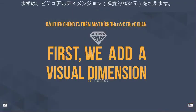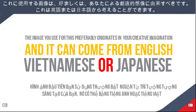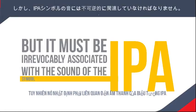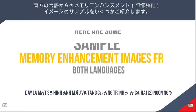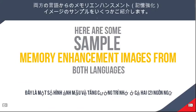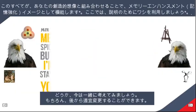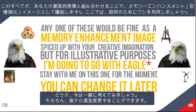First, we add a visual dimension. The image you use for this preferably originates in your creative imagination, and it can come from English, Vietnamese, or Japanese. However, it must be irrevocably associated with the sound of the IPA symbol. Here are some sample memory enhancement images from both languages. Each one of these, spiced up with your creative imagination, would be fine as a memory enhancement image. But for illustrative purposes, I'm going to go with eagle. Stay with me on this for the moment — you can change it later if you wish.